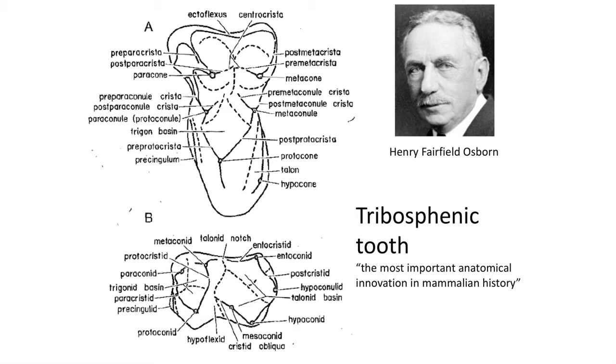A year after he published his short paper on Tyrannosaurus rex, Osborne published a rather large monograph on the tribosphenic molars of mammals. Osborne called the evolution of the tribosphenic molar the most important anatomical innovation in mammalian history. He realized that paleontologists studying mammals lacked a vocabulary to describe the various cusps on mammal teeth, and he set about naming the cusps in a way that could reflect their evolution through time.